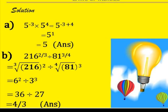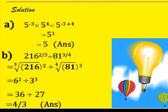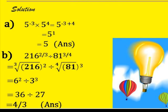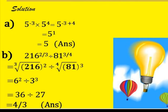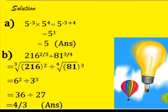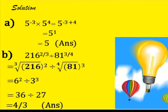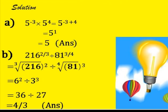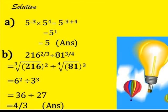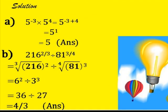Part B: 216 raised to the power 2 over 3, divided by 81 raised to the power 3 over 4. The first thing to do is to simplify each of the terms. Hence, you'll have 6 raised to the power 2, divided by 3 raised to the power 3 on simplification, and that gives us 4 over 3 as a final answer.